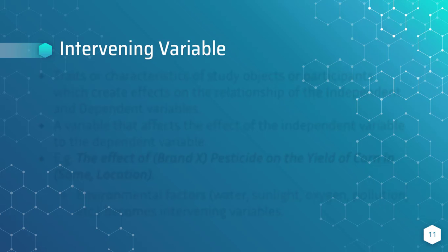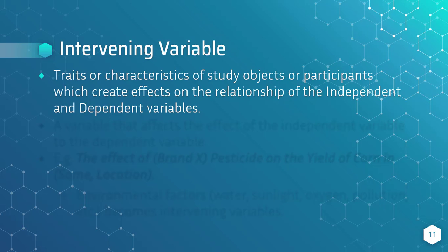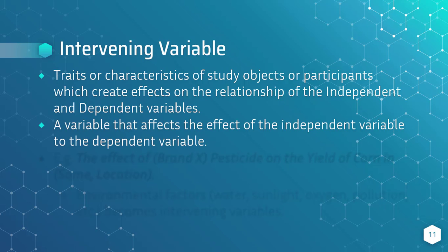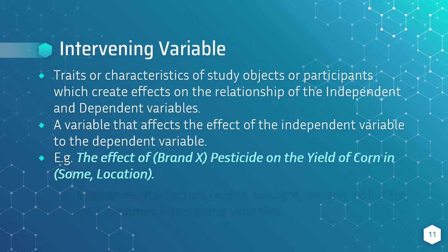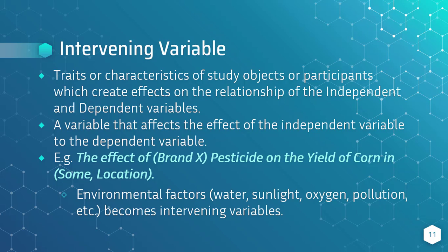Intervening variables. These are traits or characteristics of the study objects or participants which create effects on the relationship of the independent and dependent variables. It is a variable that affects the effect of the independent variable on the dependent variable. For example, a researcher would like to observe the effect of a certain pesticide on the yield of corn. However, if the research is done on the field, then environmental factors could affect the yield as well as the independent variable — in this case, the pesticide. These environmental factors are a sample of intervening variables.